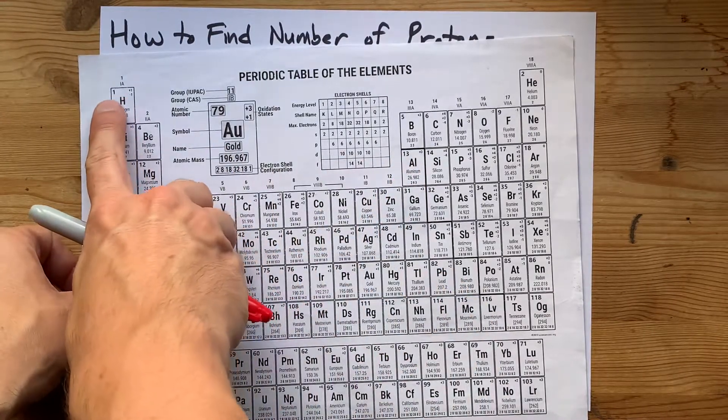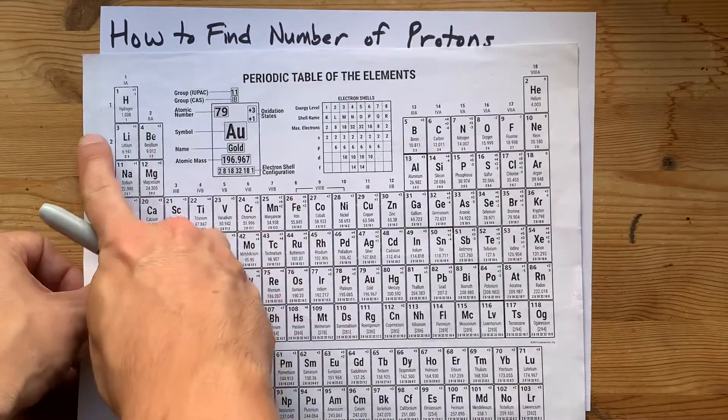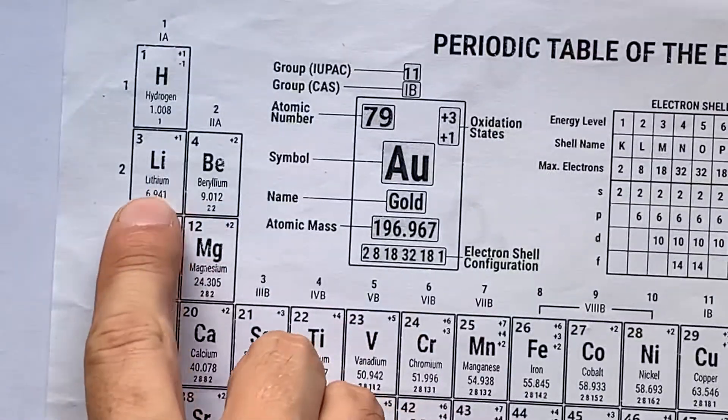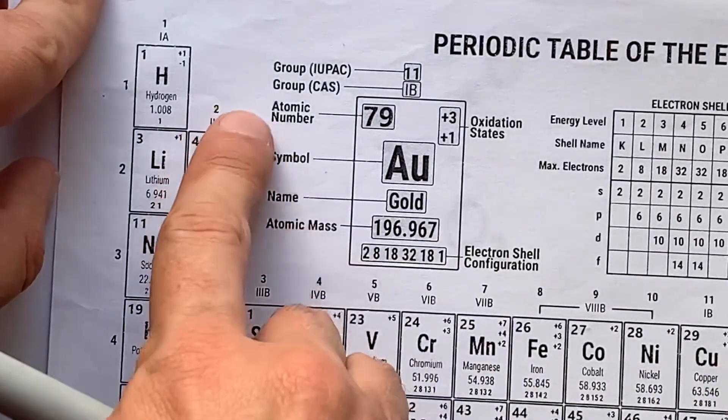The atomic numbers are the ones that go up by whole number amounts: one, two, three, four. Not the smaller numbers that go up by decimal amounts - those are atomic masses, not atomic numbers.